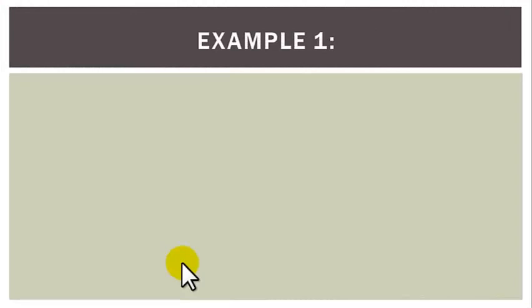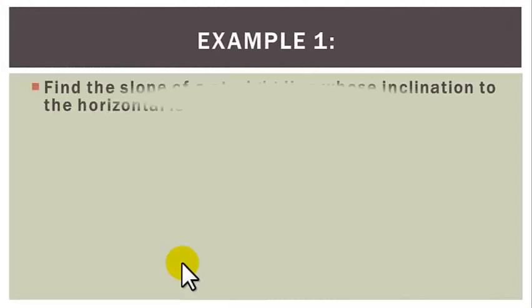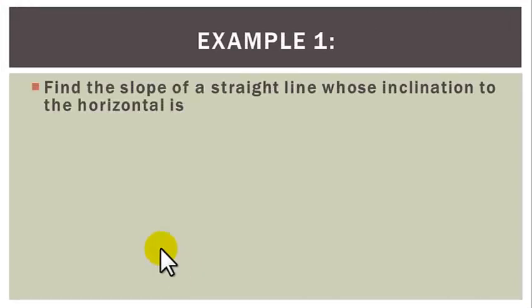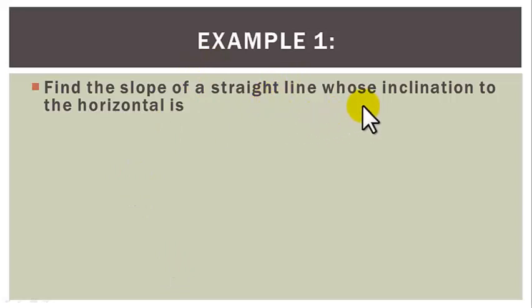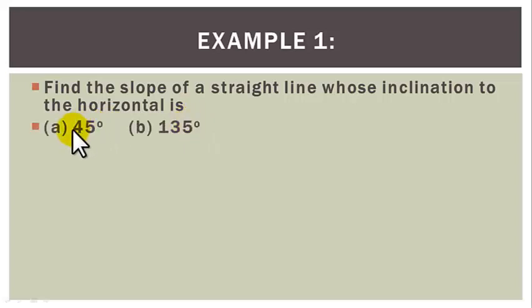Example 1: Find the slope of a straight line whose inclination to the horizontal is: A. 45 degrees, B. 135 degrees.